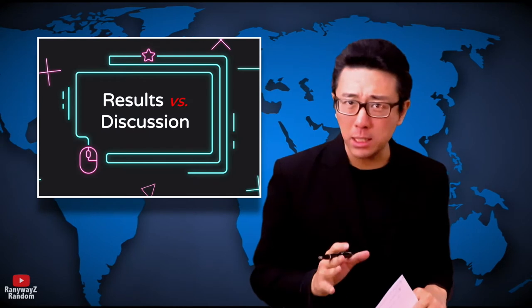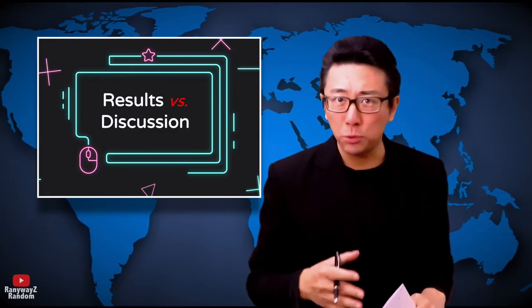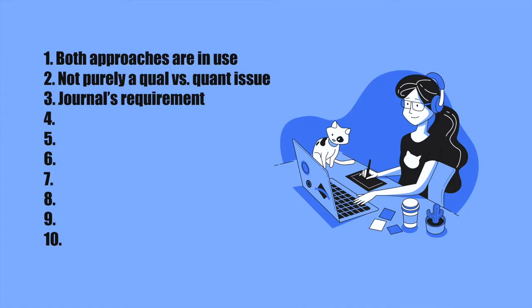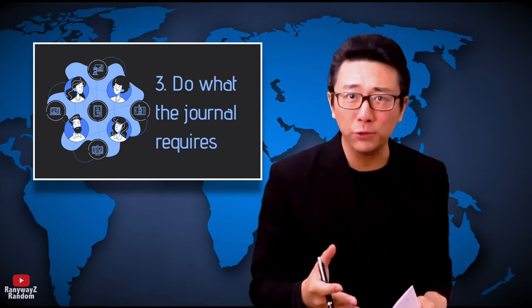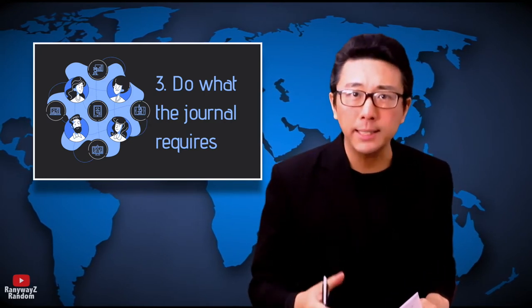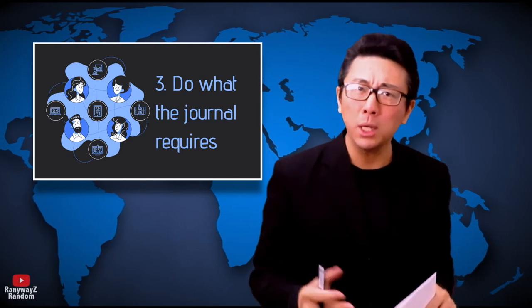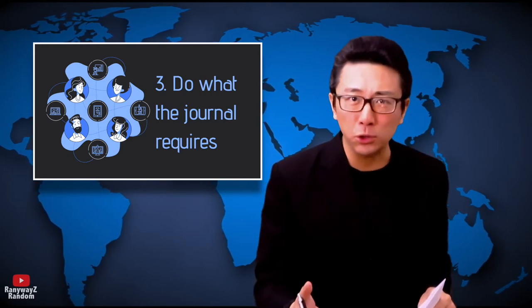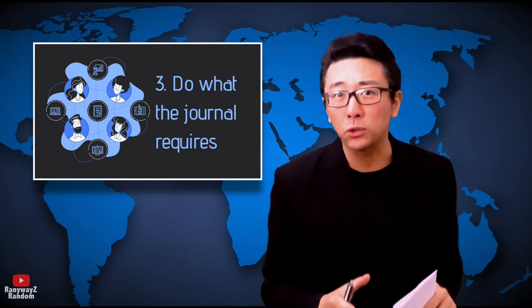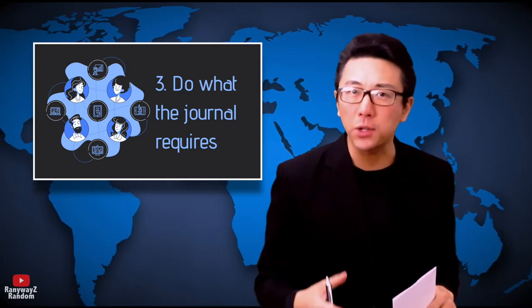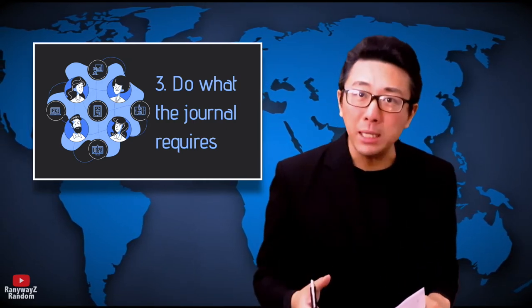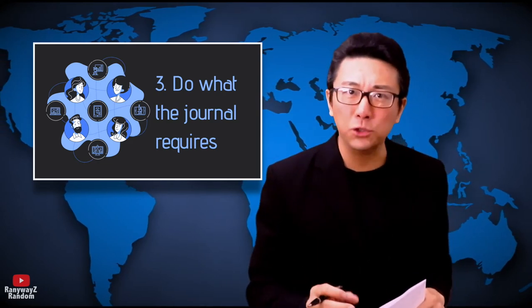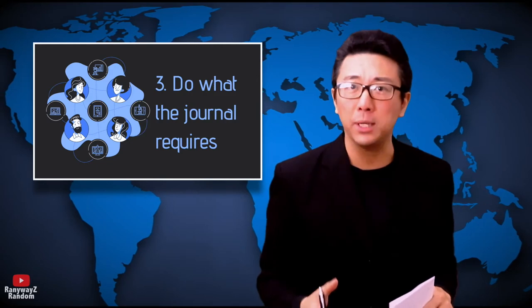Point three: one factor that often determines which structure to use is very simple. If you're writing a paper for a particular journal, do what the journal asks. If the journal's guidelines say results and discussion should be two different sections, do that. If the guidelines say combine them, combine them. When trying to get published in a particular journal, we generally do what the journal asks. Most of the time, the journal's guidelines are not negotiable. In practice, a pragmatic determining factor for the paper's structure is simply what the journal requires.